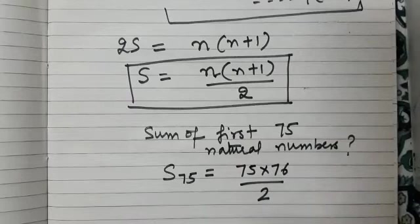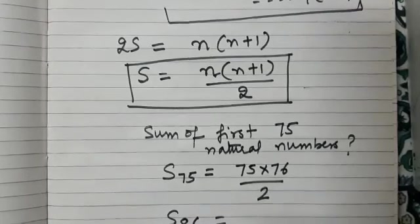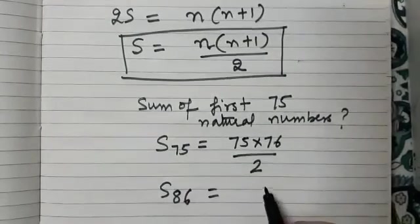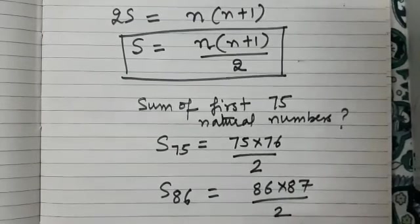Quickly you can answer and simplify. Tell me, what will be the sum of first 86 natural numbers? Just give me the expression. Yes, it is 86 into 87 divided by 2.